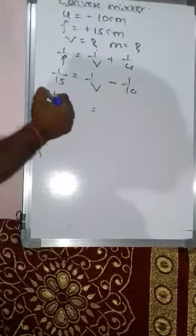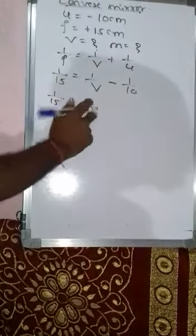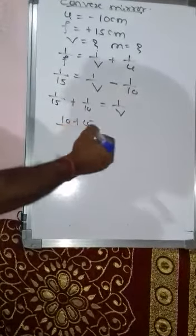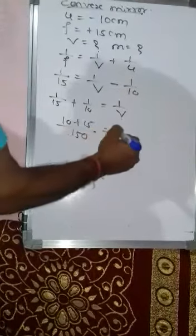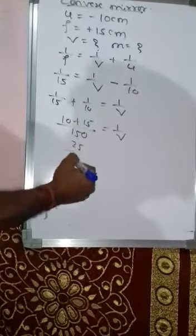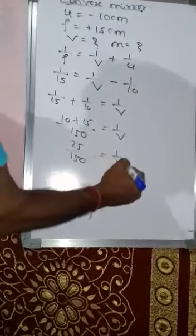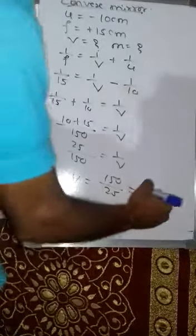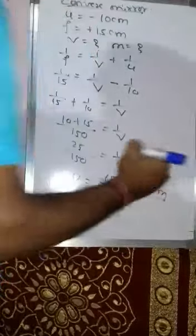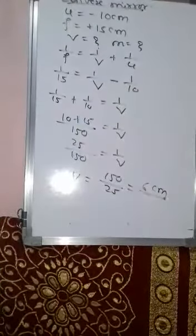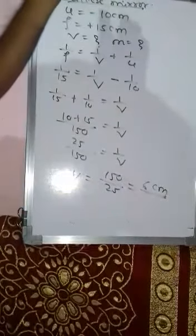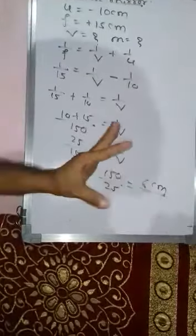Taking 1 by 10 to the other side: 1 by 15 plus 1 by 10 equals 1/v. Cross multiplication gives 10 plus 15 by 150, that is 25 by 150 equals 1/v. Taking the reciprocal, v equals 150 by 25, which is 6 cm. So for convex mirror the value of v is 6 cm, compared to 30 cm for concave mirror — there is a change in v.